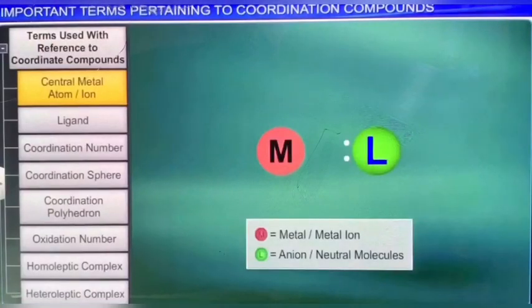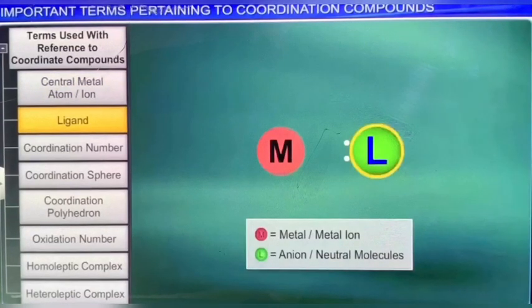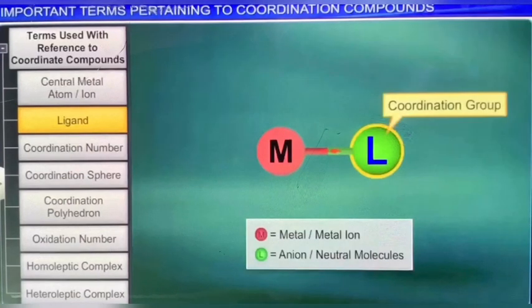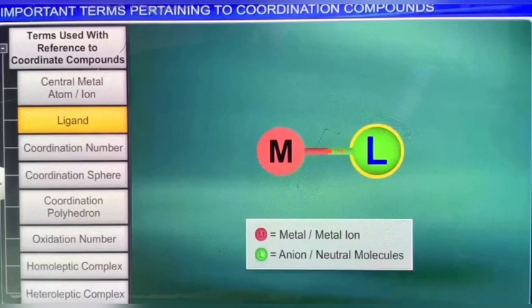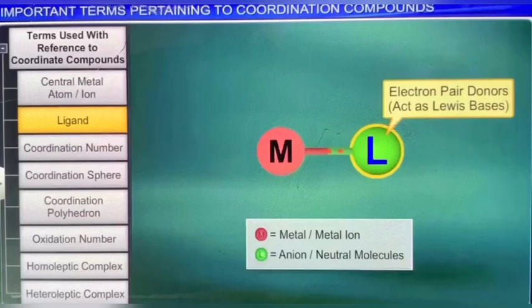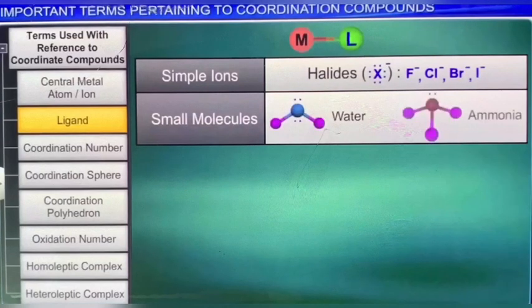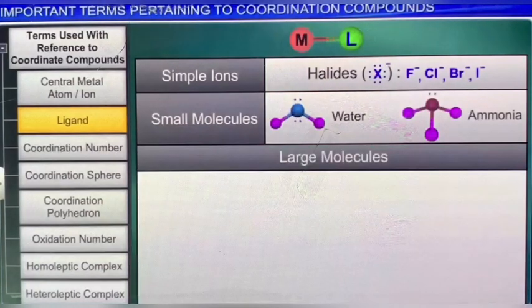Another important term is ligand. A ligand is any atom, ion, or molecule capable of donating a pair of electrons to the central atom. A ligand is also known as a coordination group. As ligands are electron pair donors, they act as Lewis bases. Ligands may be simple ions such as halide ions, small molecules such as water or ammonia, or large molecules such as ethane-1,2-diamine, or ethylenediamine tetraacetate ion.